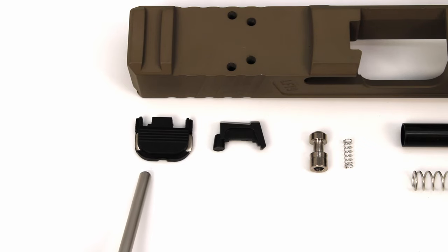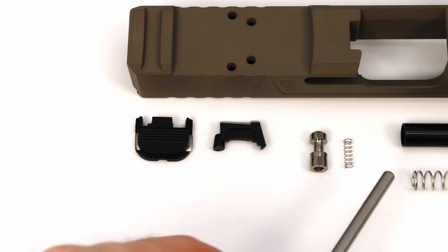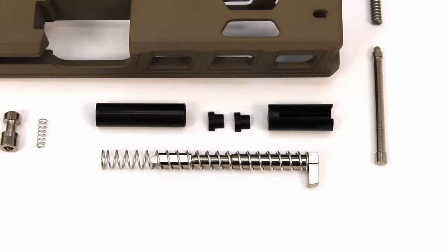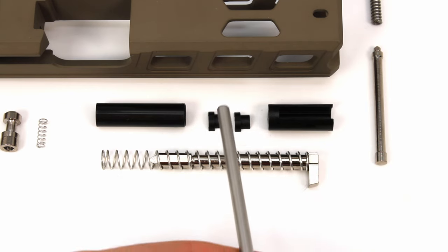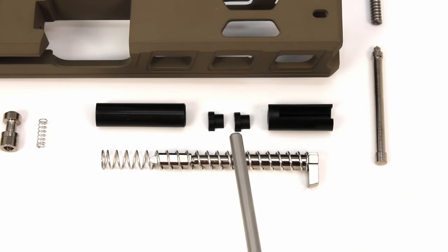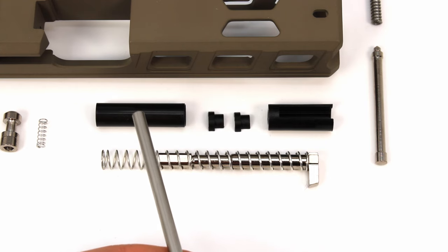Out back here we have our slide cover plate as well as our extractor. Then we have our firing pin safety and our firing pin safety spring. For our firing pin assembly, we have the firing pin itself as well as the firing pin spring. We have the spacer sleeve, we have our spring cups that act as spring retainers once this is all put together.